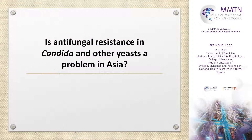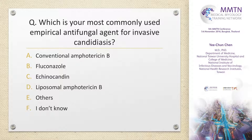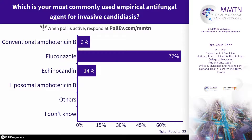So antifungal resistance in Candida is a real problem in Asia. Which is your most commonly used empirical antifungal agent for invasive candidiasis? In Taiwan, fluconazole in the adult population is used as the number one. But in pediatrics, conventional amphotericin B is still very useful and safe. Nowadays, more and more echinocandin use is seen.